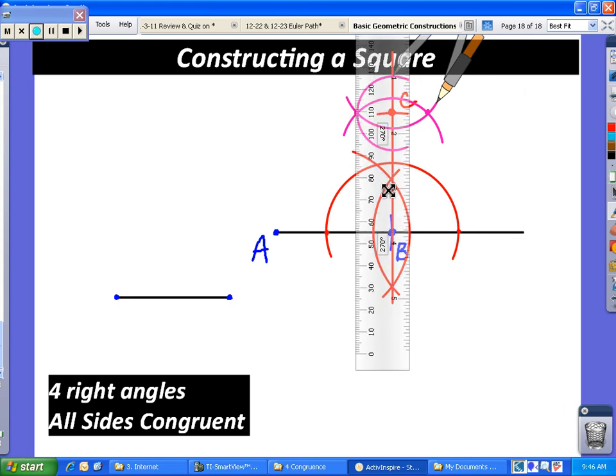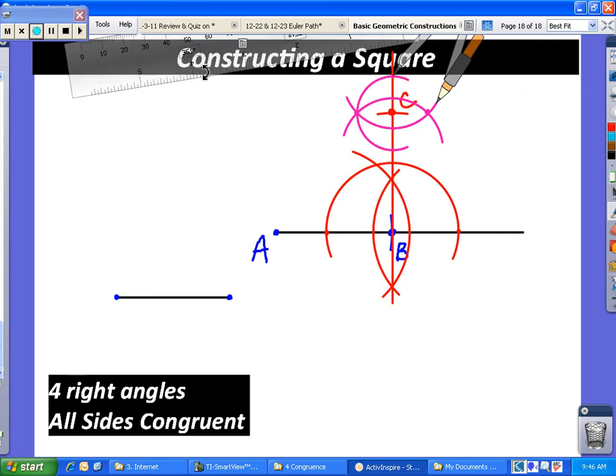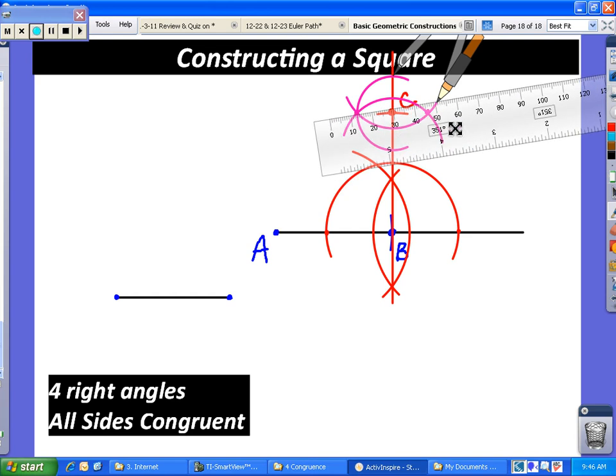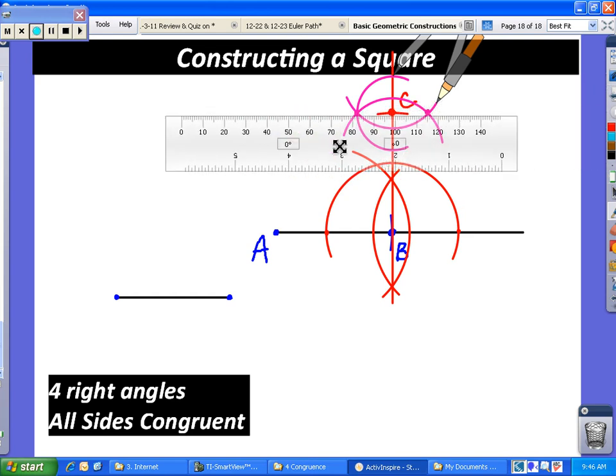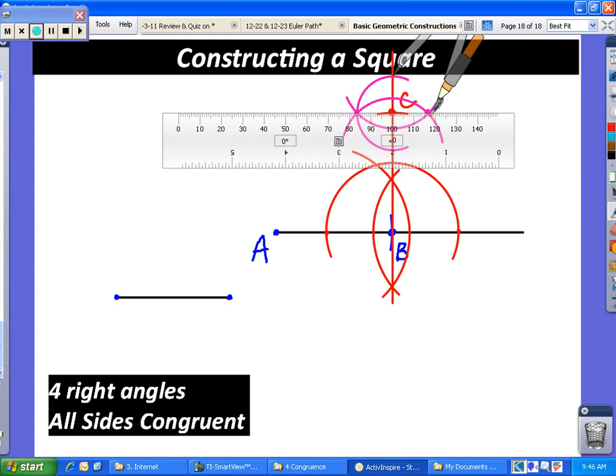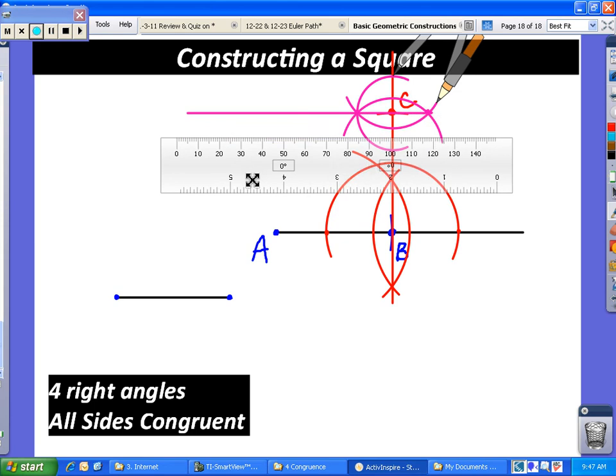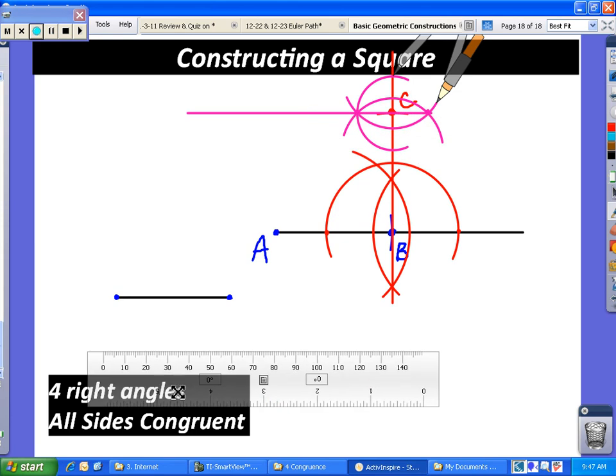We're going to now draw another segment. Let's flip our ruler around and line up the two points. We want to probably pull it down a little bit because we're going to want to connect back around. So there now we have our next segment.